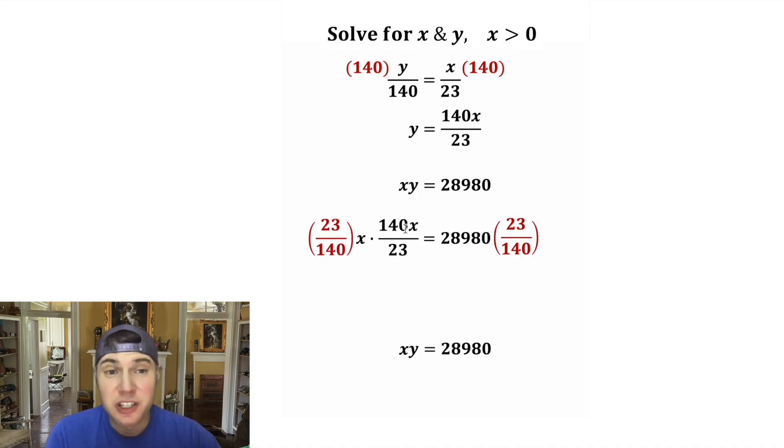And now let's multiply both sides by the reciprocal of this, which is 23 over 140. These 23s will cancel each other out, and the 140s will cancel each other out. So on this left-hand side, we have x squared. And on this side, this times this is equal to 4761.